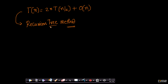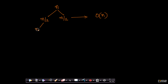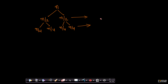This is called the recursion tree method — I will explain why it is called a tree. We break the array into sub-arrays of size n/4 and n/4. To merge each pair of n/4 sub-arrays, you need c·(n/4 + n/4) = c·(n/2). And the total across both pairs is c·n. Let us write O(n) as a constant c·n for clarity.